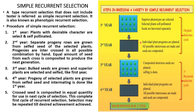The procedure of simple recurrent selection: in the first year, plants with desirable characters are selected and self-pollinated. In the second year, separate progeny rows are grown from the self-seed of selected plants. The progenies are intercrossed in all possible combinations by hand.